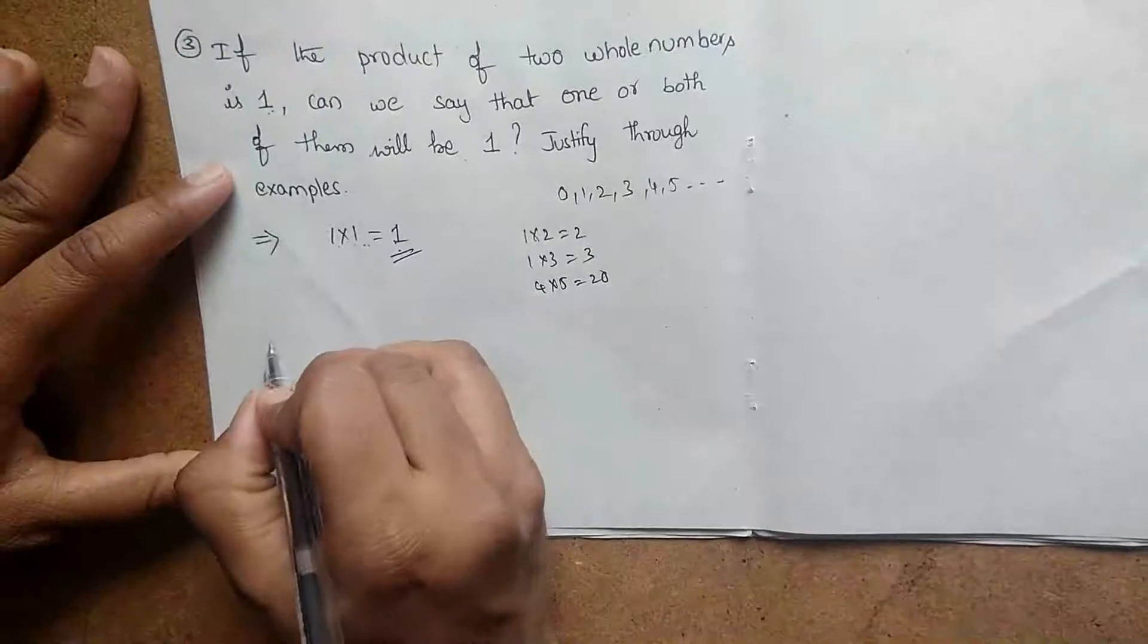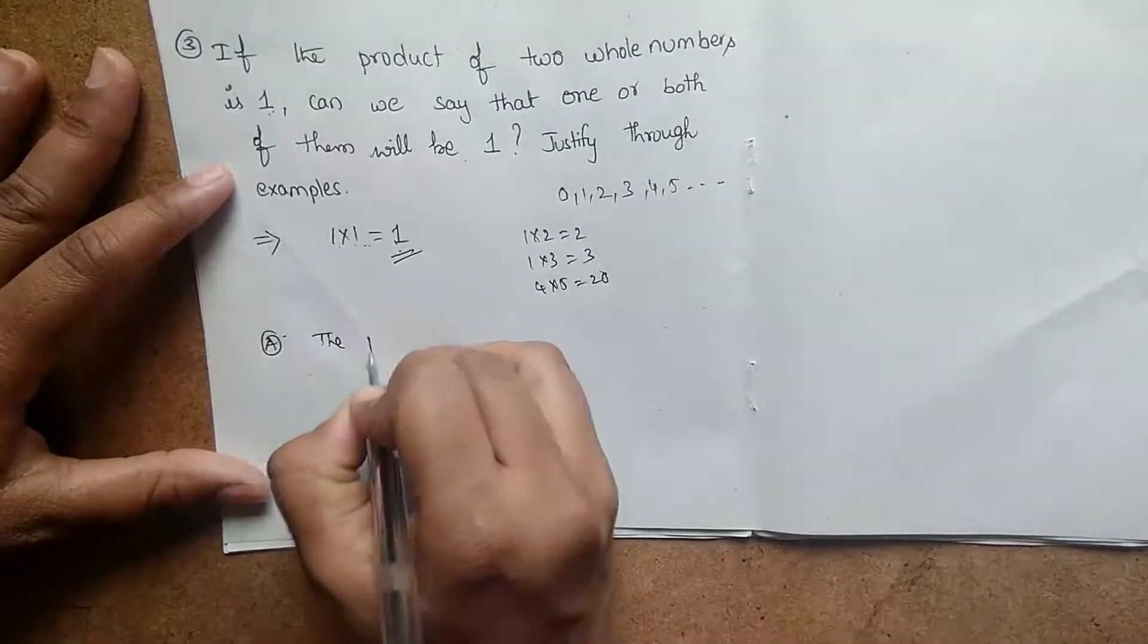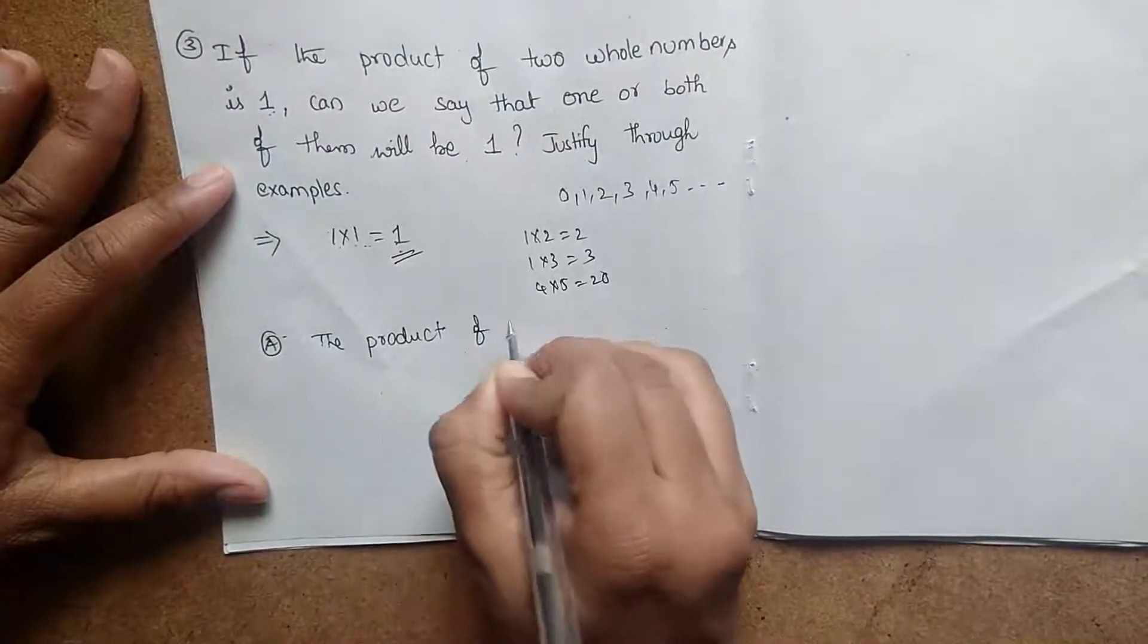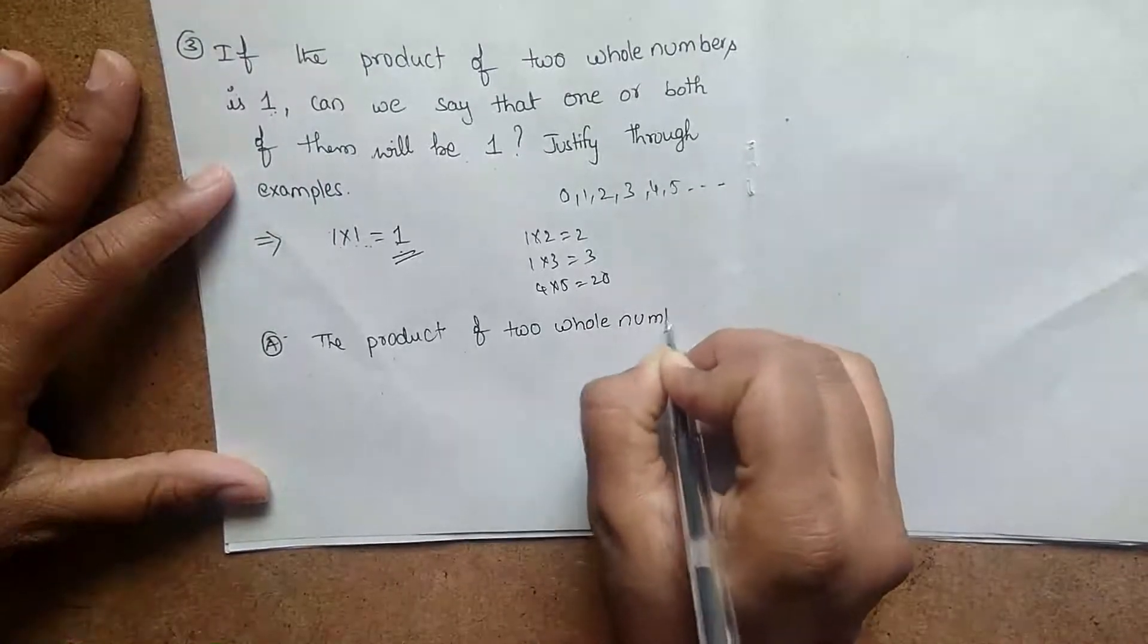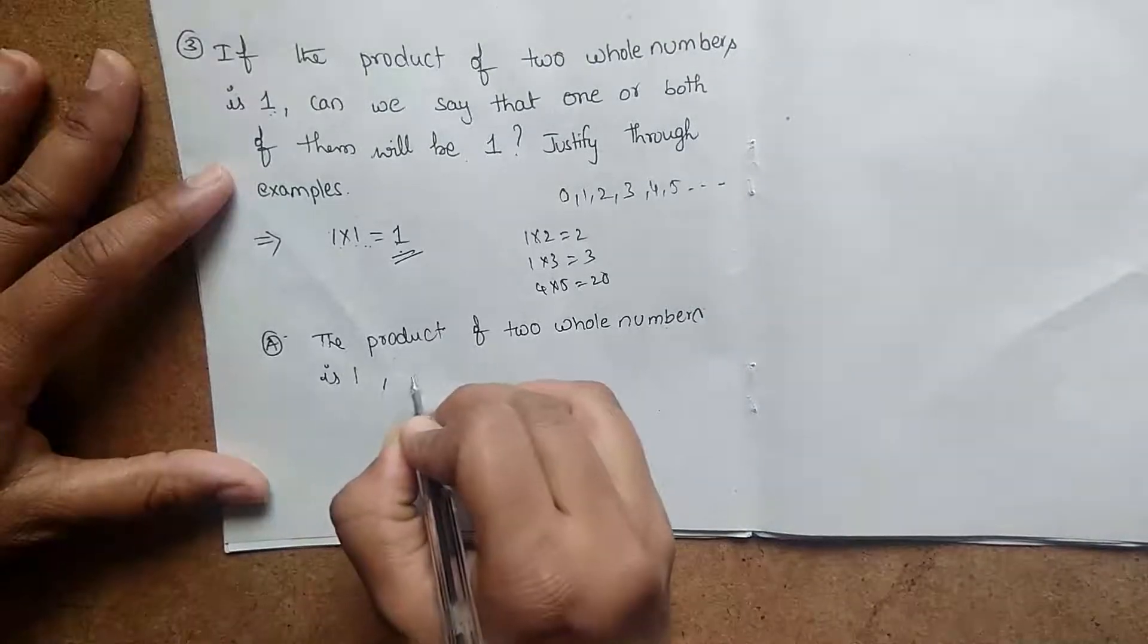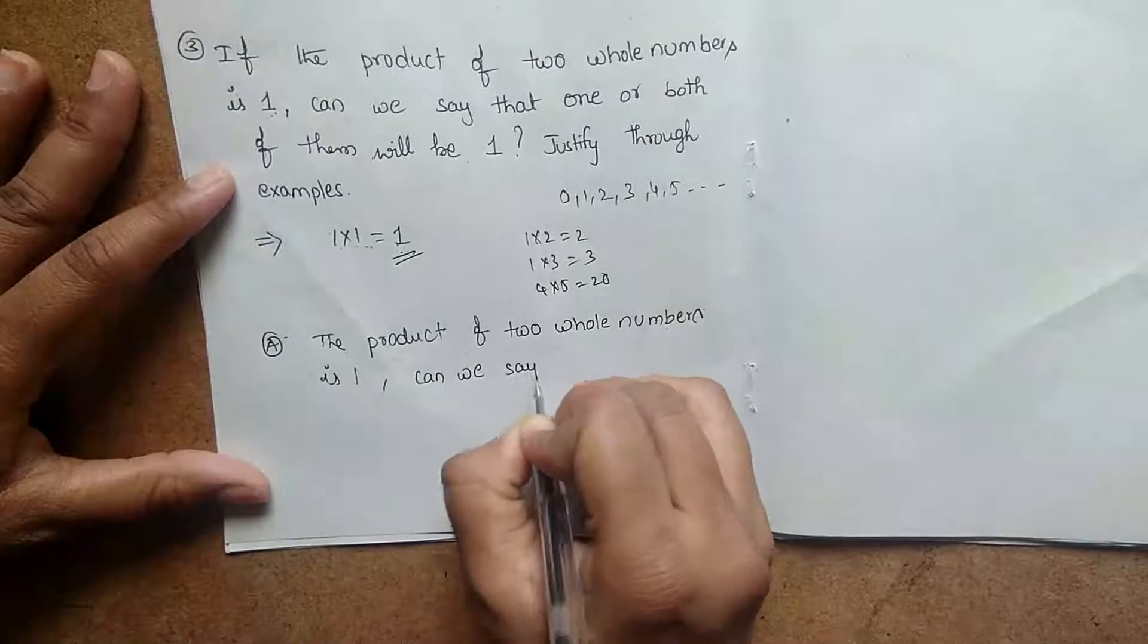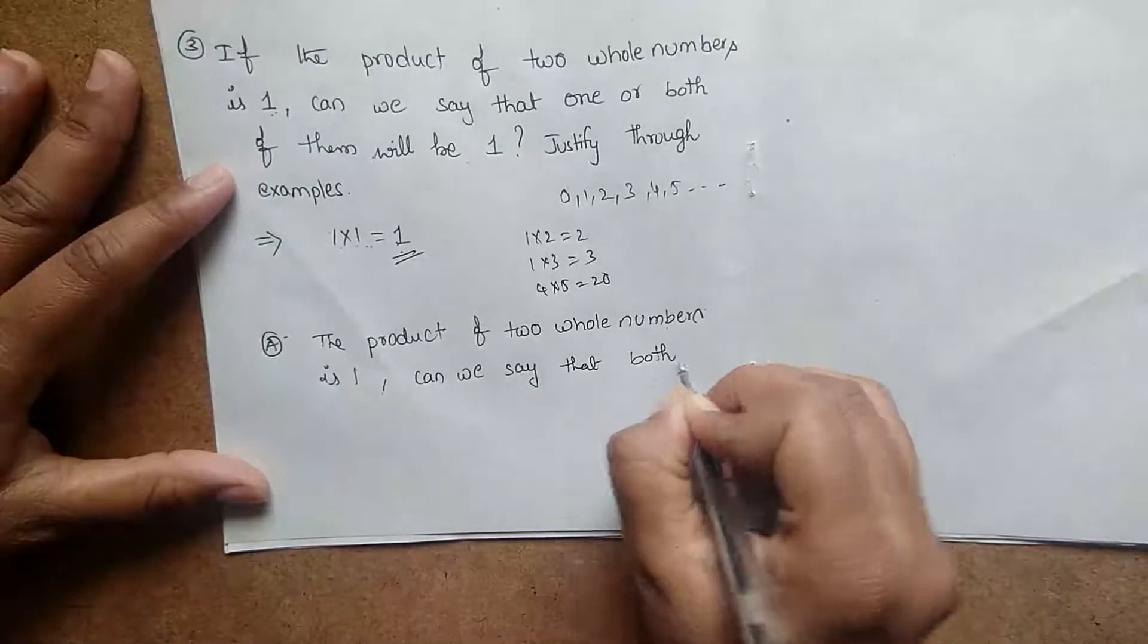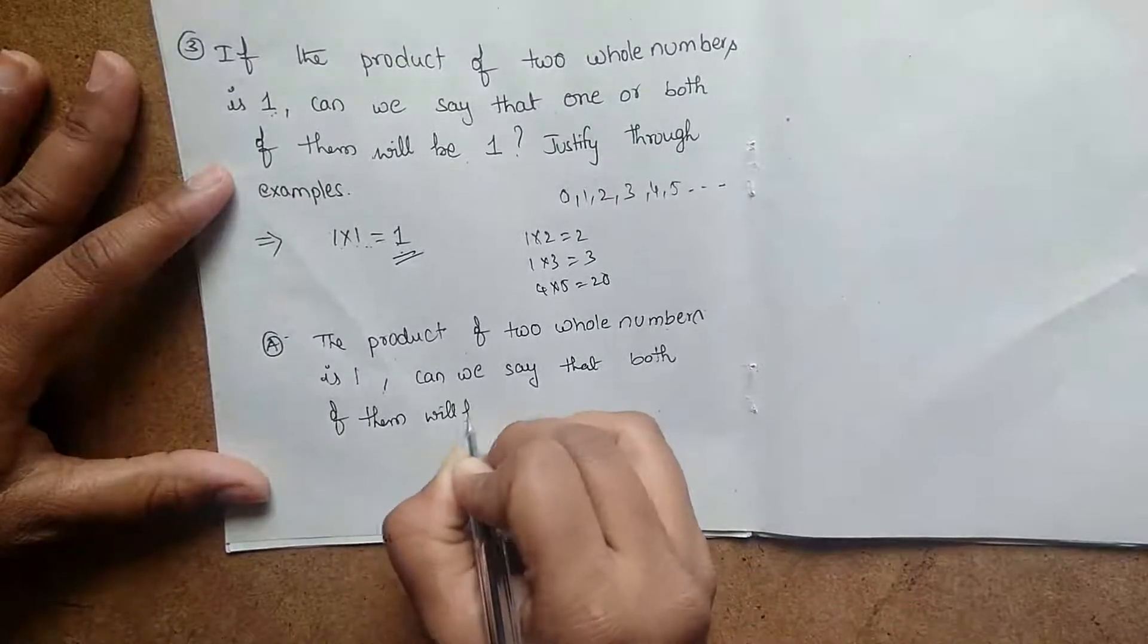So we have to write it here. The answer is: the product of two whole numbers is 1, can we say that both of them will be 1?